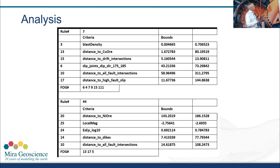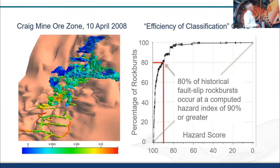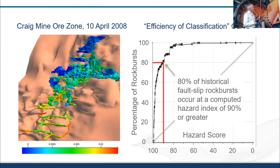The rules that come out of this processing include things like rule number seven, which combines six different criteria: blast density, distance to copper ore, distance to drift intersections, dip of joints with dip direction between 175 and 185 degrees, distance to all fault intersections, and distance to fault segments with high fault slip tendency, each with individual bounds in parameter space. The output is a hazard assessment displayed in colour on the mine infrastructure — red is high hazard, blue is low. The classification result shows that 80% of historical rock bursts occurred within the top 10% of the hazard probability.